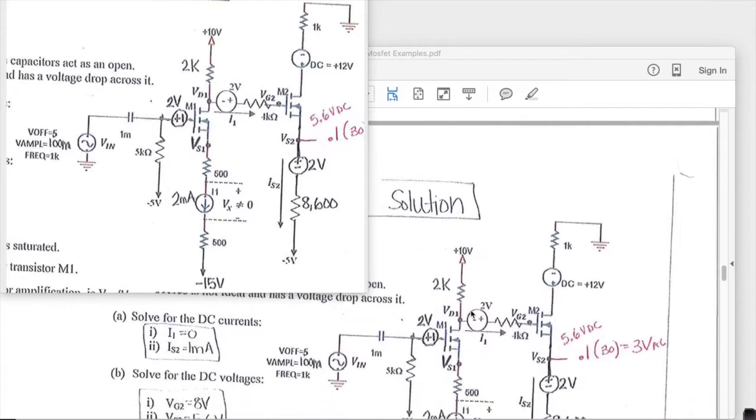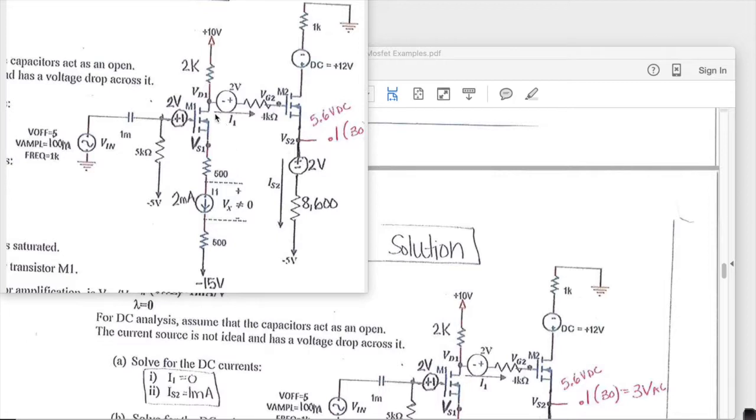The first thing we're going to do is notice that I1, which is here, is going to be 0. We also notice that the current is already stated for IS2. So that means that with no current flowing in this branch, so this is 0, all the current that is flowing through here is also equal to the current that is flowing here and so this is also 2 milliamps flowing in this branch.